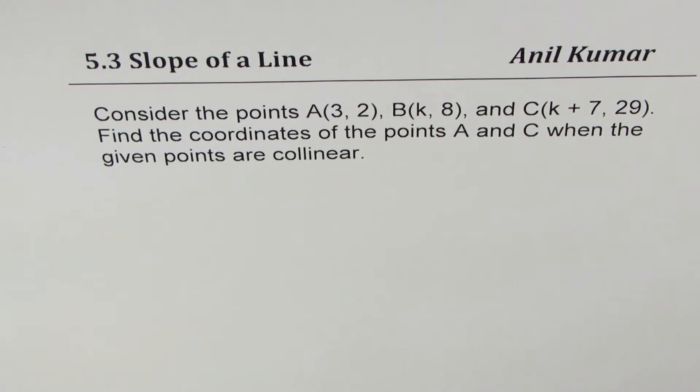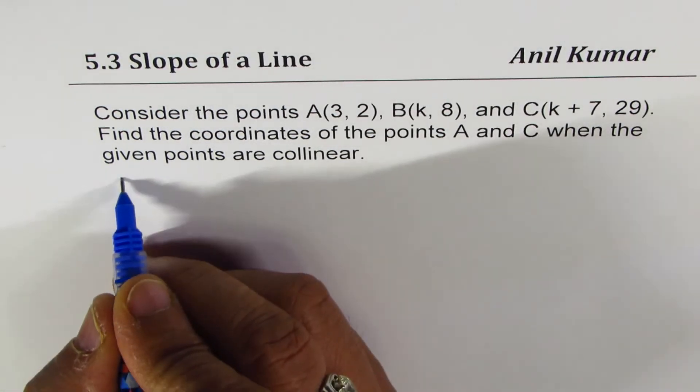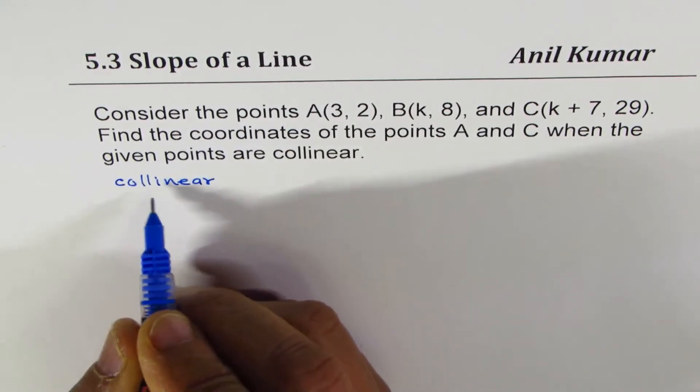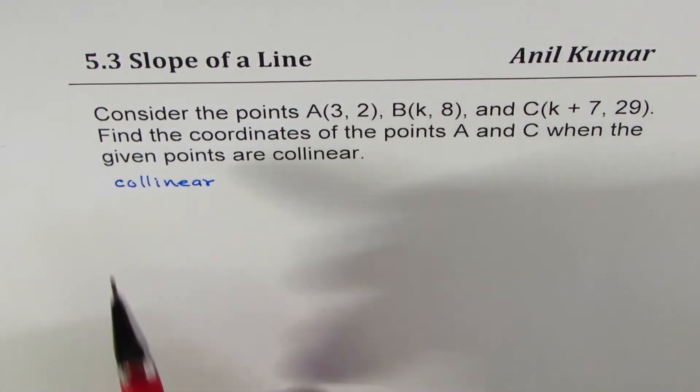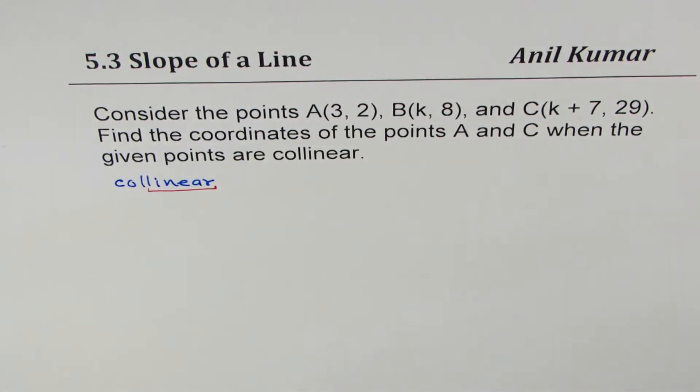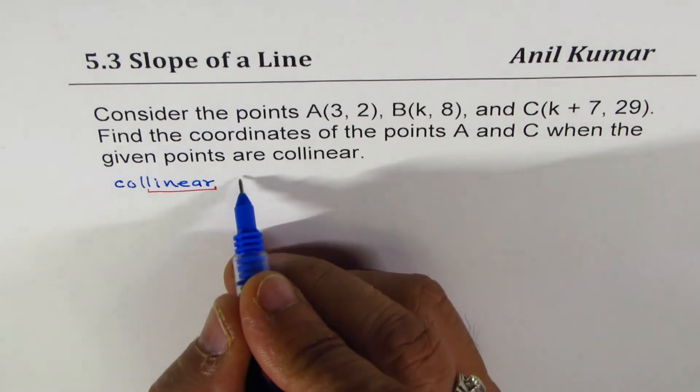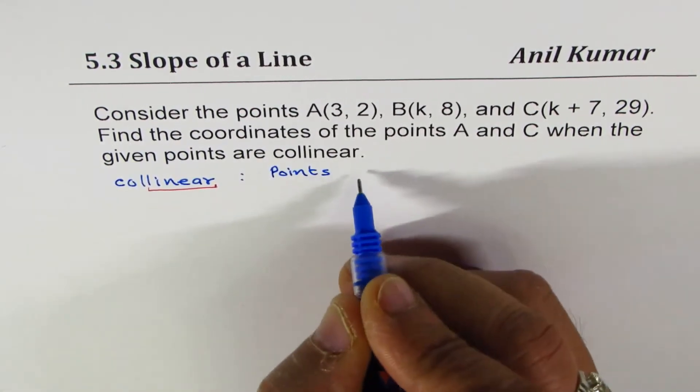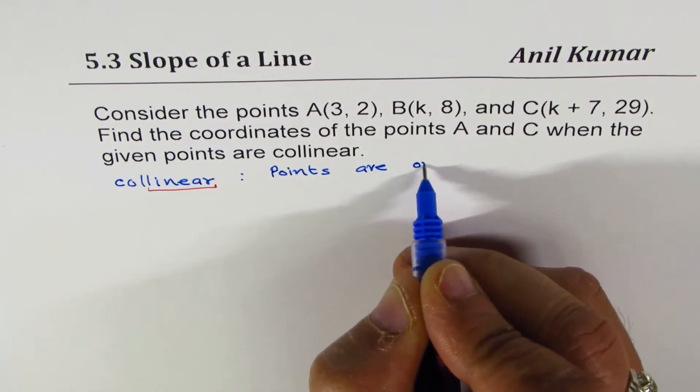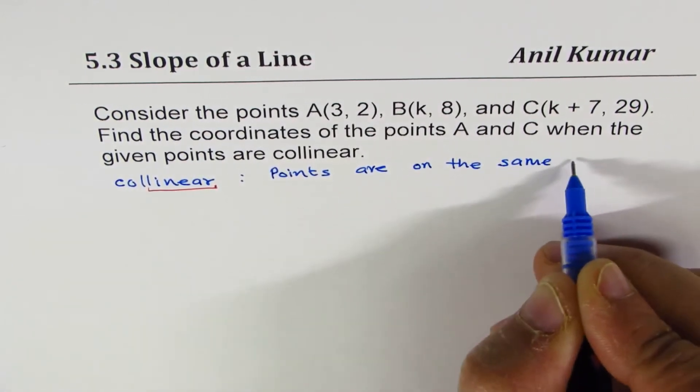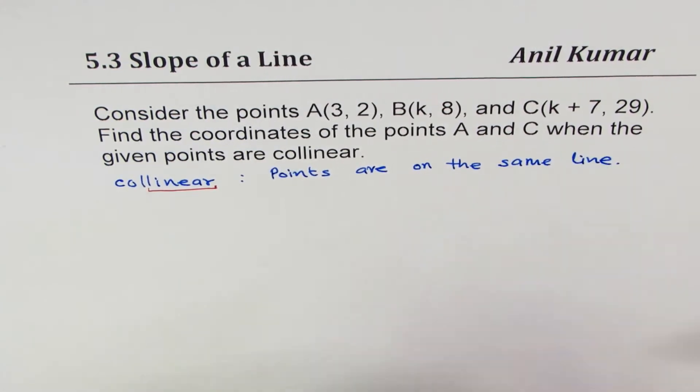Let's try to understand what the word collinear means. It means lying in the same line. You find the words combination with collinear. It means the points are on the same line. That is the meaning of the word collinear.